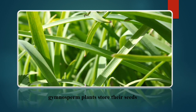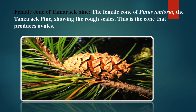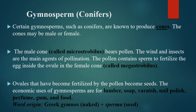Gymnosperm plants store their seeds in female cones. You can observe here in the diagram the female cone of pines showing the rough scales. Certain gymnosperms such as conifers produce cones that may be male or female. The male cone is called the microsatrobulus and bears pollen grains; the female cone is called the macrosatrobulus.